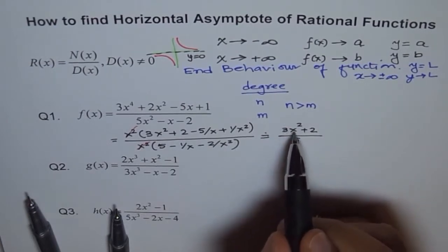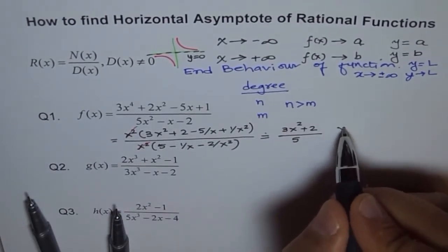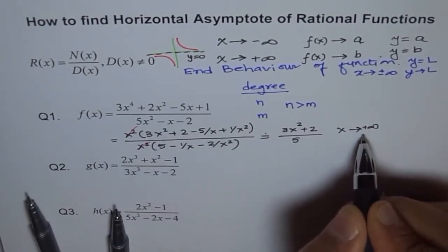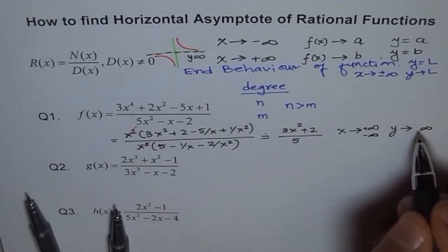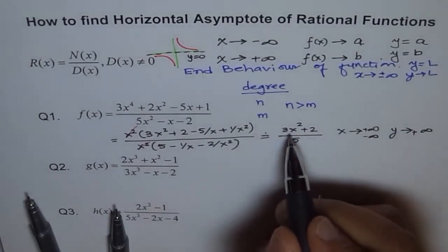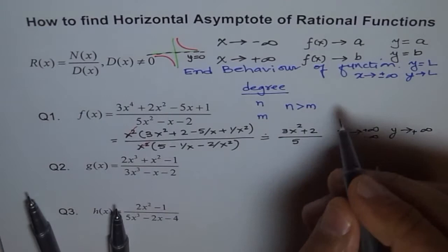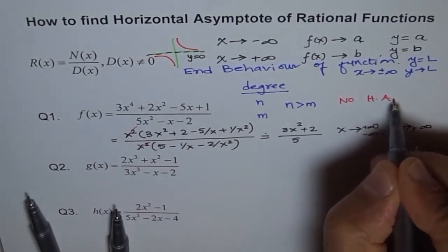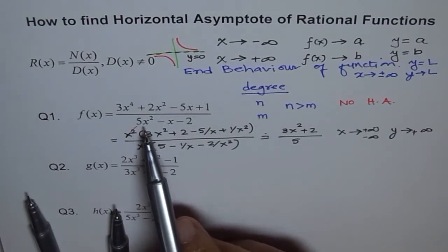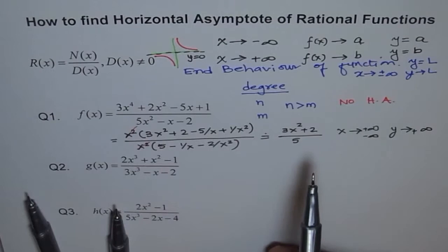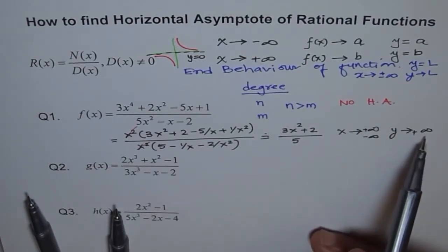If x is very large — approaching positive or negative infinity — then 3x²/5 grows without bound, so y is also very large. It does not approach a fixed value. Therefore, in this case, there is no horizontal asymptote. Whenever the degree of the numerator is higher than the degree of the denominator, there is no horizontal asymptote.